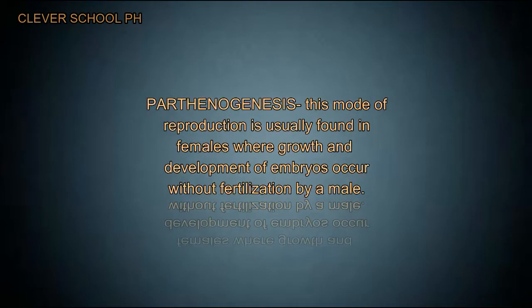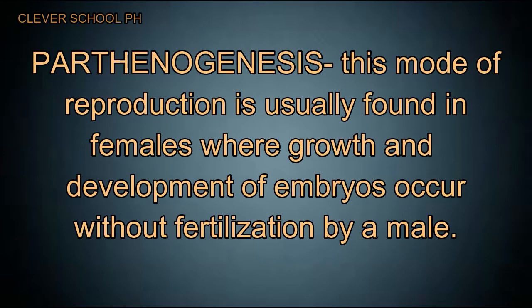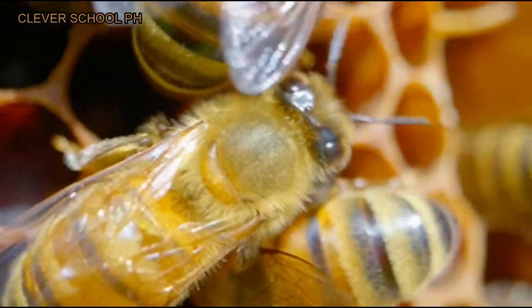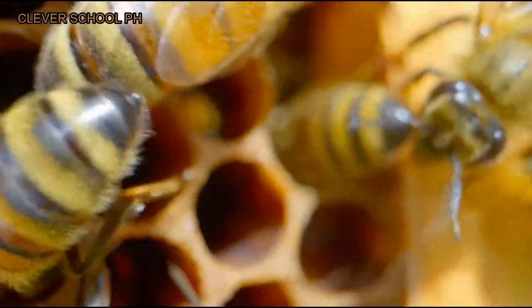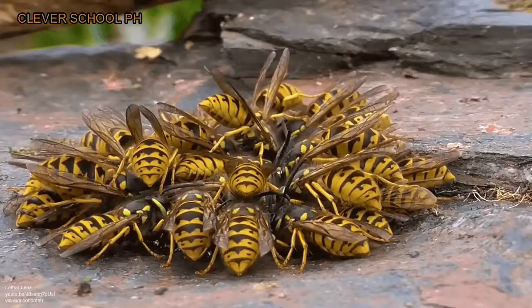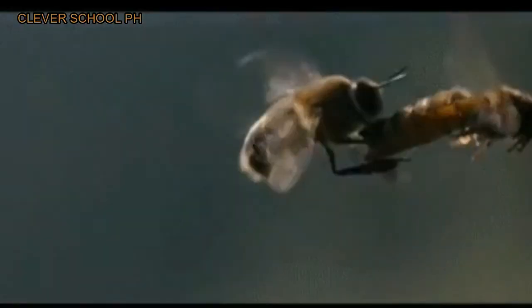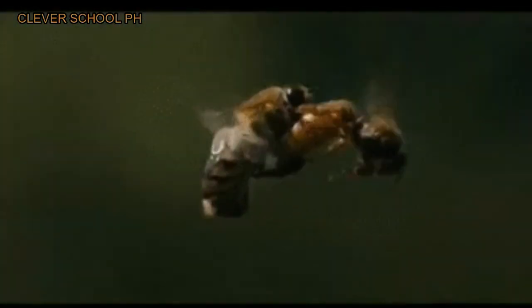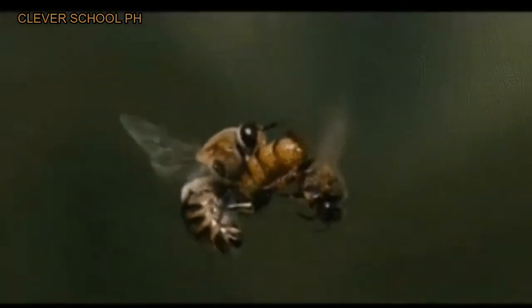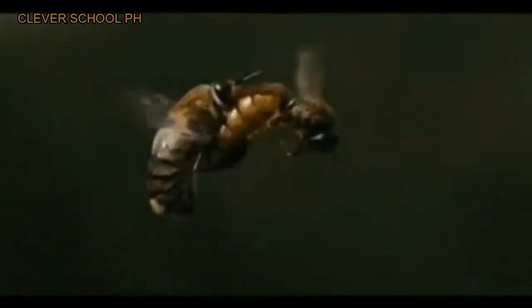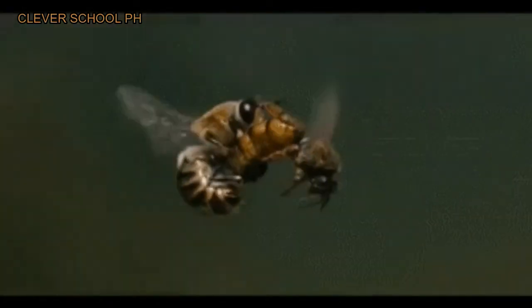Parthenogenesis is a mode of reproduction usually found in females where growth and development of embryos occur without fertilization by a male. Parthenogenesis occurs naturally in some invertebrates like species of wasps, bees, and ants. For example, in bees the queen bee mates only once. She can then produce either unfertilized eggs or fertilized eggs. The unfertilized eggs become male drones, while the fertilized eggs become female workers or queens.